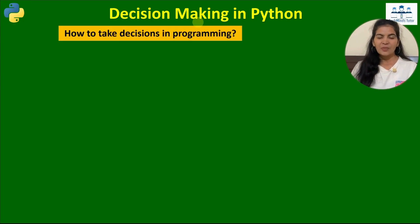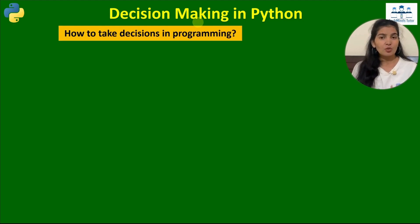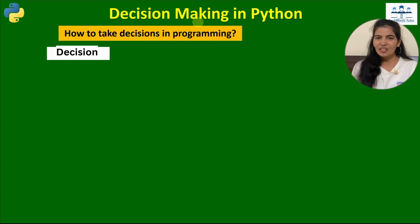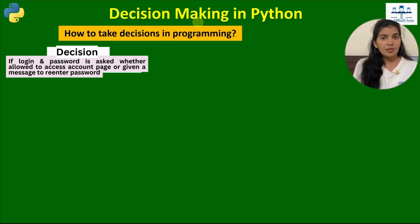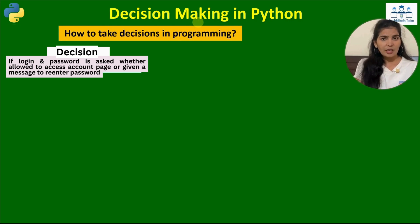Today's topic is decision making. In real life we take decisions daily, like what are the important tasks to complete today, if it's Sunday we decide to go shopping, or if it's cloudy we take the decision to carry an umbrella. In the same way we take decisions in programming — like if a user accesses your app, authorization is checked whether the user ID and password is correct or not.